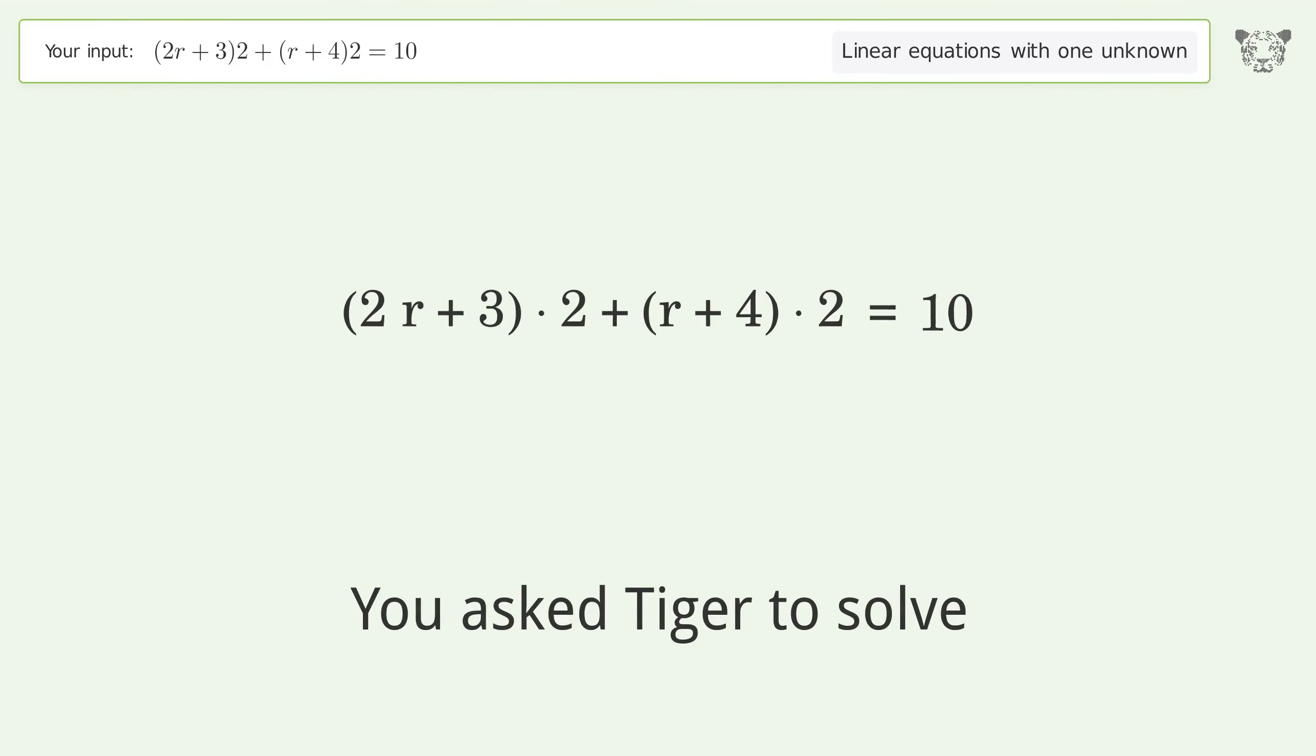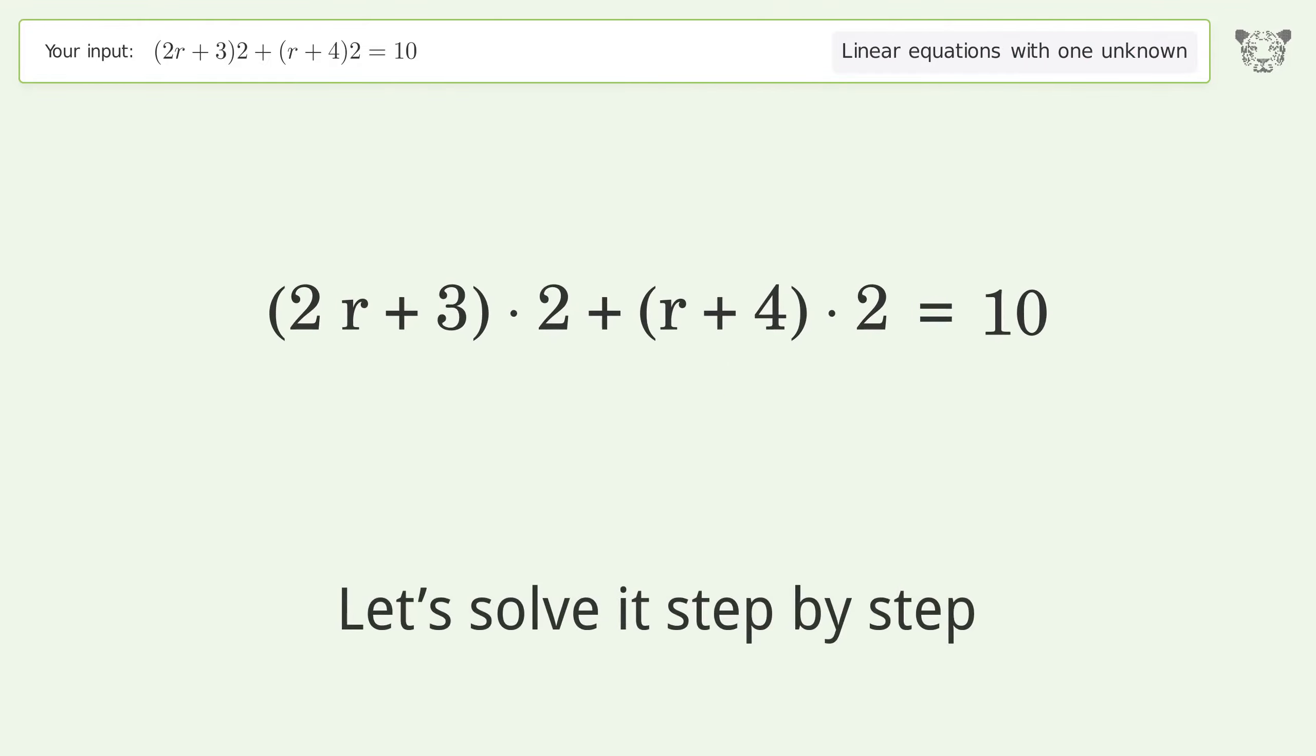You asked Tiger to solve this linear equation with one unknown. The final result is r equals negative 2 over 3. Let's solve it step by step.